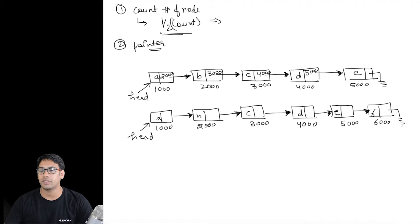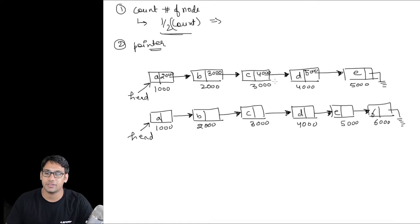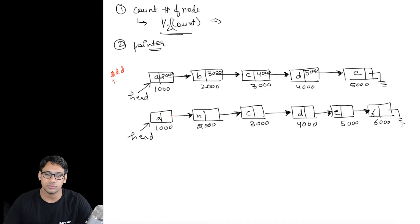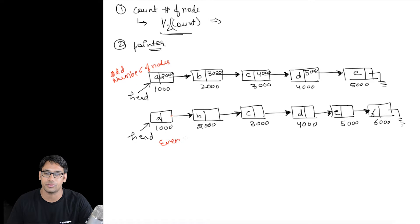Let us suppose we are having these two linked lists. What is the difference between them? The first linked list has five nodes, but the second linked list has six nodes. That means the first linked list contains an odd number of nodes, and the second linked list contains an even number of nodes.